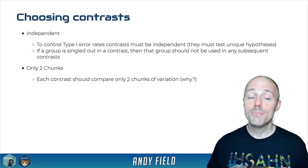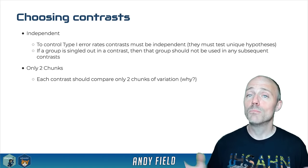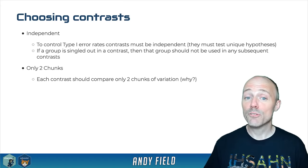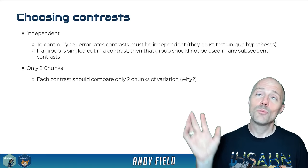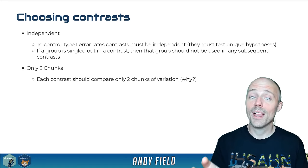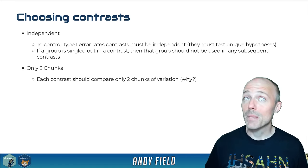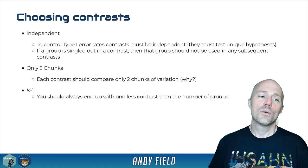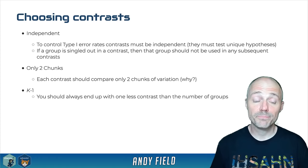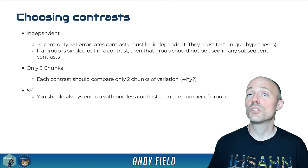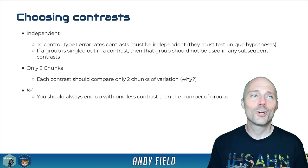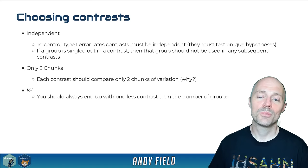You only ever want to compare two chunks at a time; comparing more creates the same ambiguity as the overall F-ratio. We want to end up with k minus one contrasts, where k is the number of groups. With three groups, we want two contrasts. This is the same as dummy coding — you end up with one fewer contrast than the number of groups.